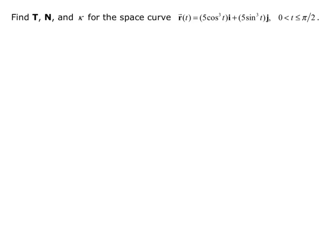So we want to find the unit tangent, the principal unit normal, and curvature for the space curve R of t equals 5 cosine cubed of t i plus 5 sine cubed of t j.